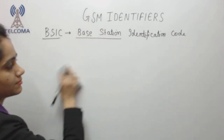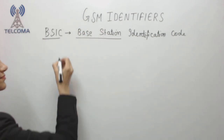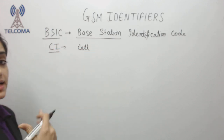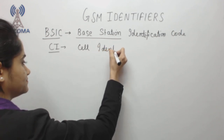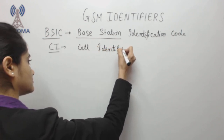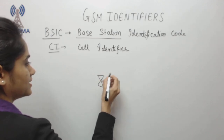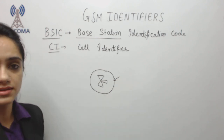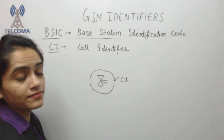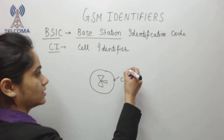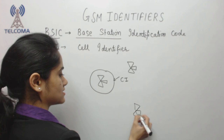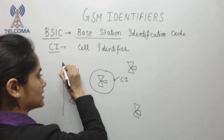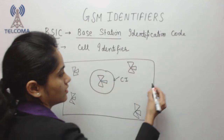Next we have CI, which is an identifier used to identify a cell — we call it the Cell Identifier. For example, if we have a cell in a complete area, we require a way to identify it. There are a number of cells and these cells exist in any given location.